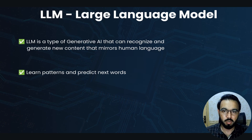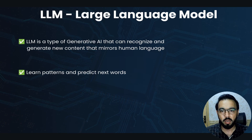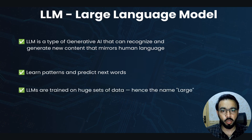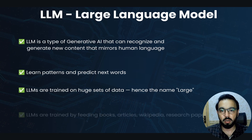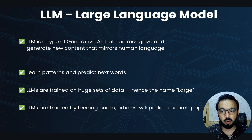Whenever you give a bunch of data in different formats, the LLM categorizes data based on different patterns, and then based on that trained data it predicts the next words. This makes it a type of generative AI — it predicts new words, meaning it can generate new data as text, video, audio, or image. LLMs are trained on huge sets of data, hence the name 'large'.